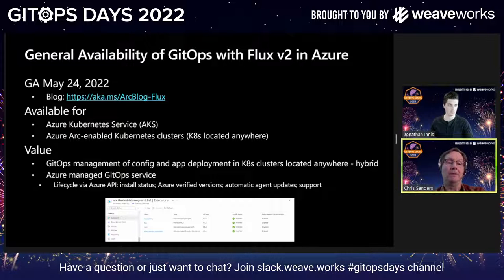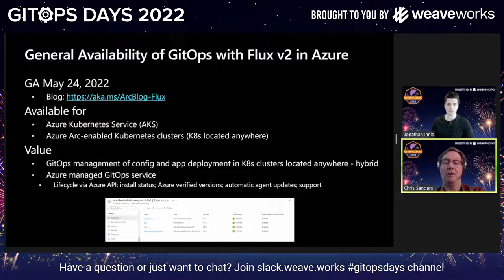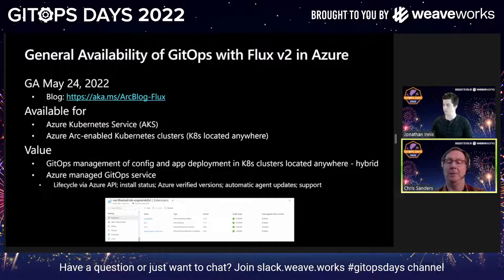The overall value of GitOps is huge. The reason we want to make it a first class integration within Azure is to enable customers using AKS or Arc Kubernetes to manage configs and app deployments across all their Kubernetes clusters. By making Flux a managed service, you get guarantees through Azure — managing the lifecycle through the Azure API, CLI, portal, PowerShell, or Terraform.